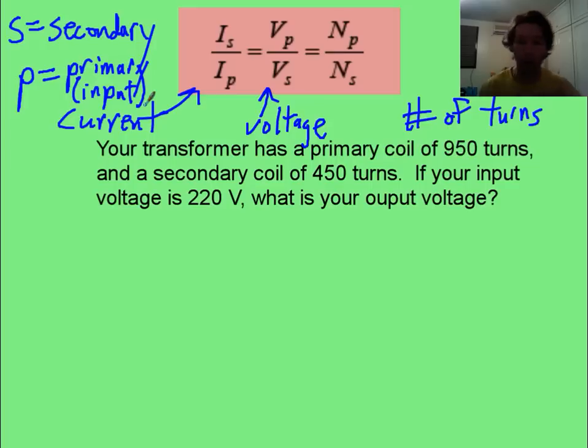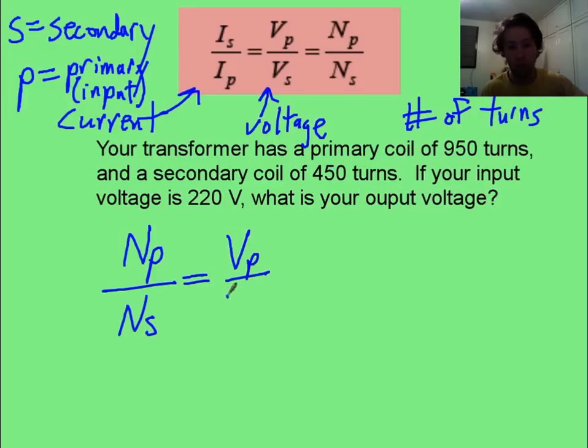Here's a sample problem. Read this, pause it and try and solve it. Now here is what you're doing. You are going to use part of this equation: say that the number of primaries over the number of secondary turns is equal to the voltage of your primary over the voltage of your secondary. Now you should know if you're going from 950 turns down to 450, that's going to step down the voltage. If you solve it and you get something that's higher than 220, you're absolutely crazy.